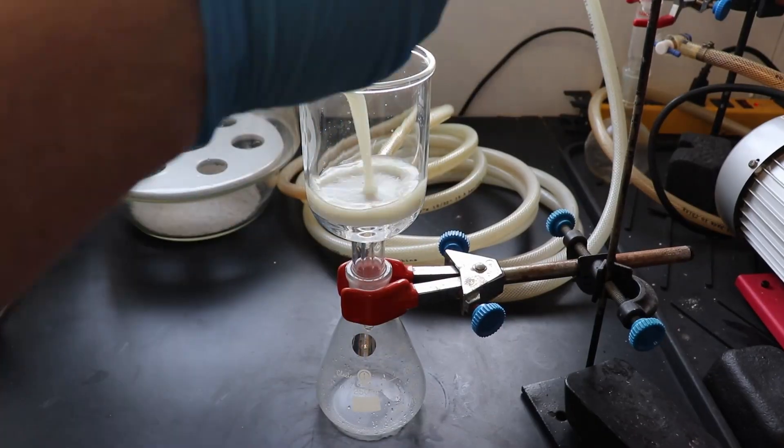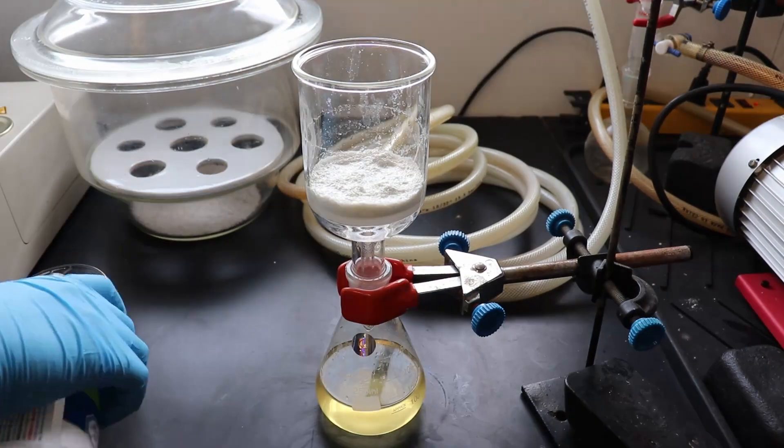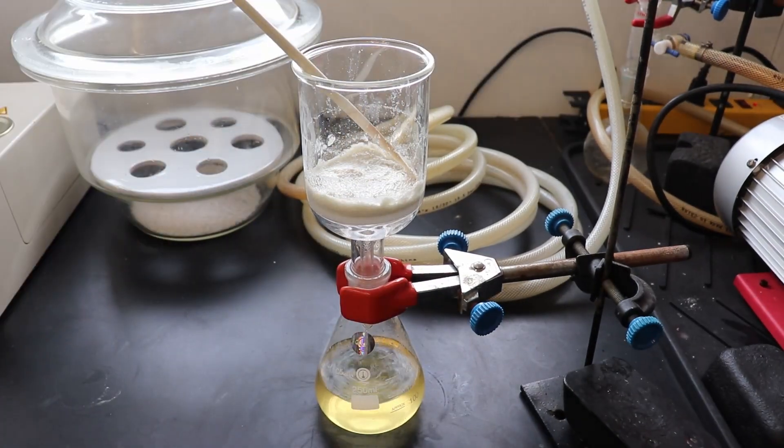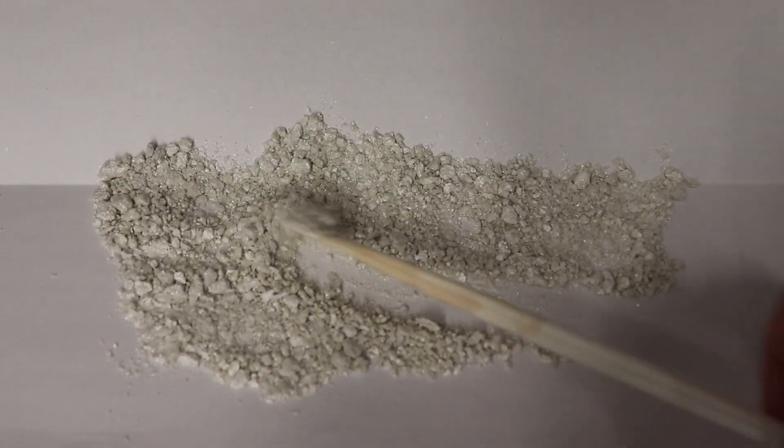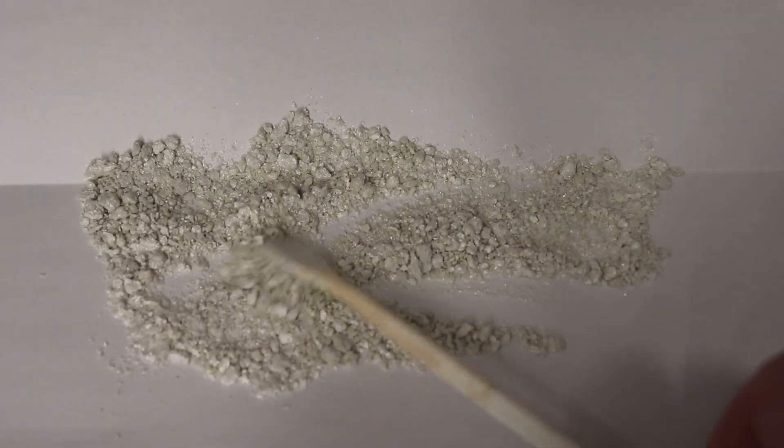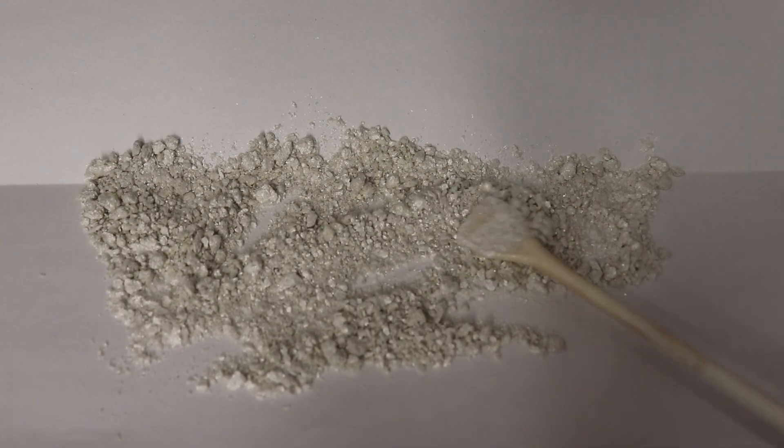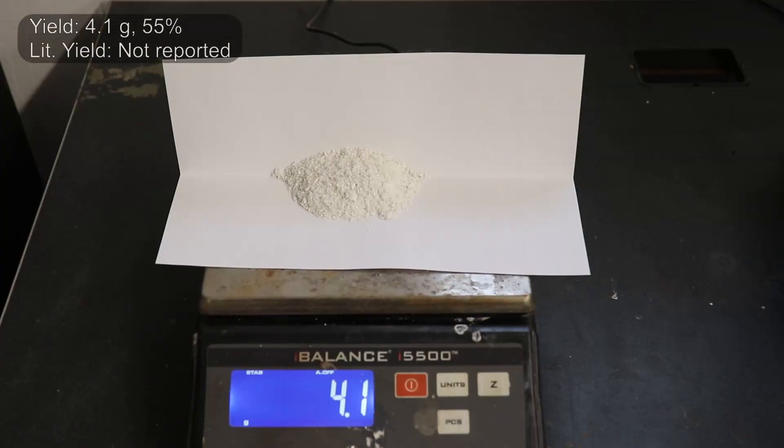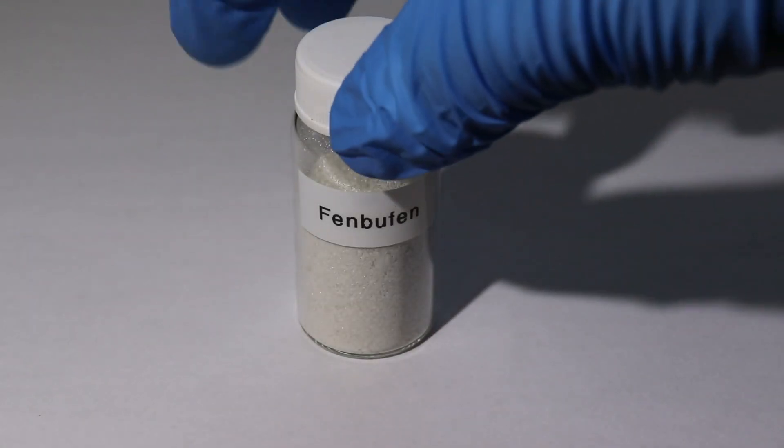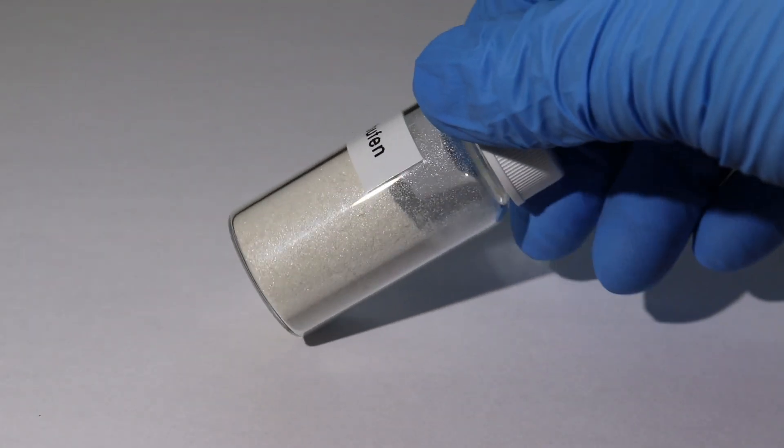I then cooled down the beaker in the freezer to fully precipitate out the product, filtered it off, and then washed with a little chilled ethanol. I ended up with 4.1 grams of a white crystalline powder, which corresponds to a 55% yield, but unfortunately there was no reported yield for the literature procedure I was following, so I can't really make a comparison there.